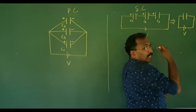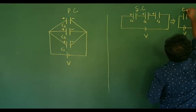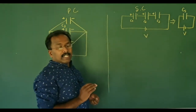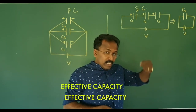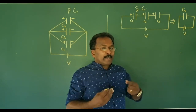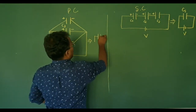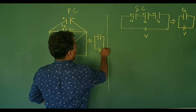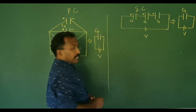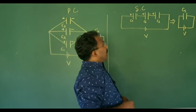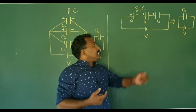This combination acts as a single capacitor. We use CS to indicate the effective capacity in the series combination. Similarly, if we have three capacitors in parallel, we use CP to indicate the effective capacity. The effective capacity and individual capacities are related differently in each case.